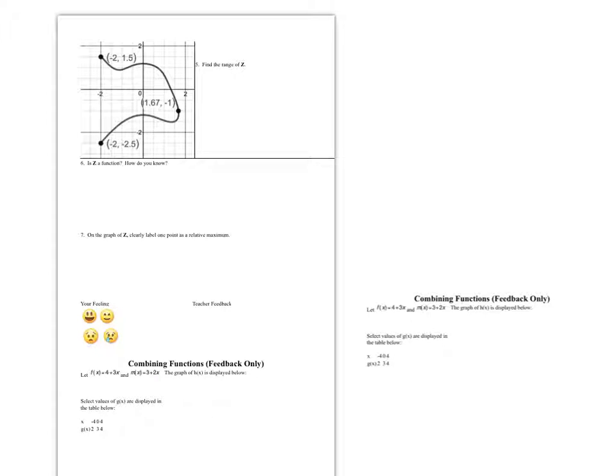First thing, we've got to find the domain of the graph that we're given. I know that domain is the leftmost point and the rightmost point in an interval. I'm going to use a closed interval because this particular domain has closed endpoints, so I can include those. I look at my leftmost point and here I've got negative 2. My rightmost point, I've got an x value of 1.67.